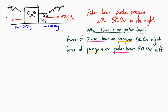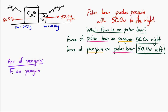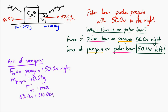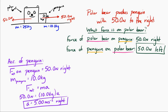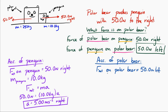Now let's solve for the acceleration of both. For the penguin: the force is 50 newtons to the right, the mass is 10 kilograms, so using Newton's second law the acceleration is 5 meters per second squared to the right. For the polar bear: the force is 50 newtons to the left, the mass is 250 kilograms, so the acceleration is 0.200 meters per second squared to the left.